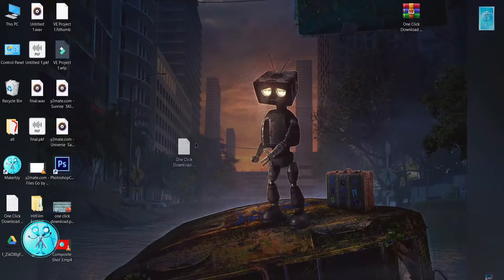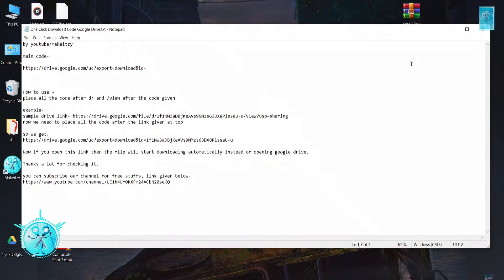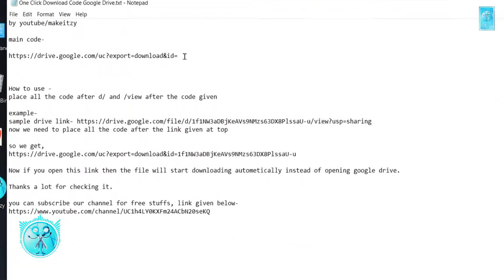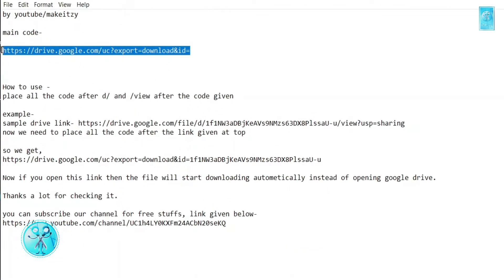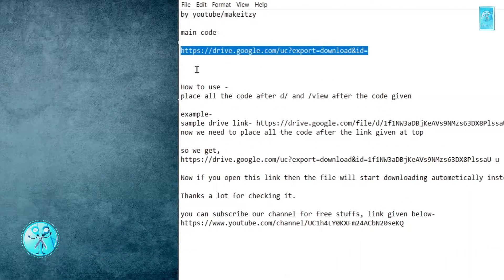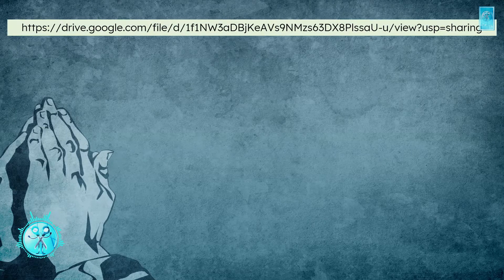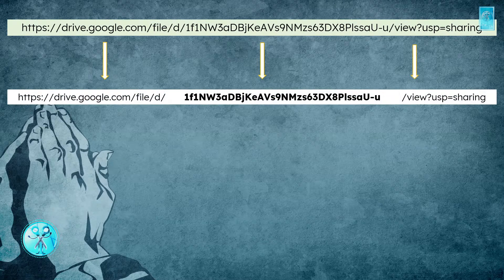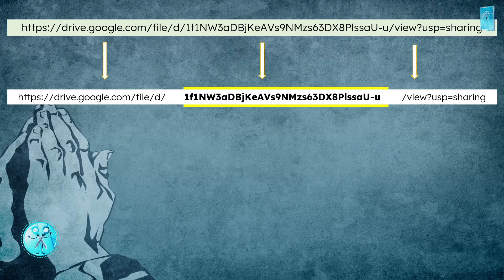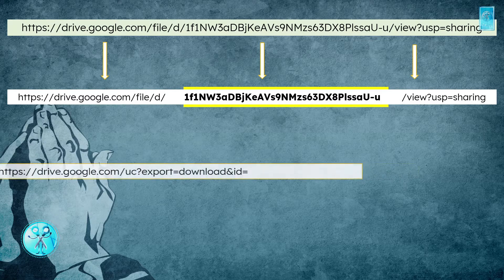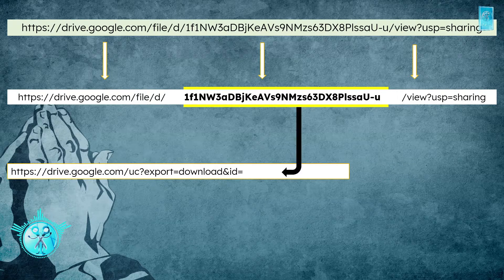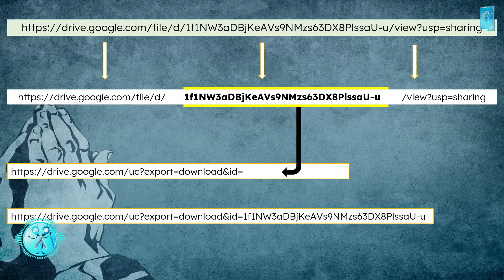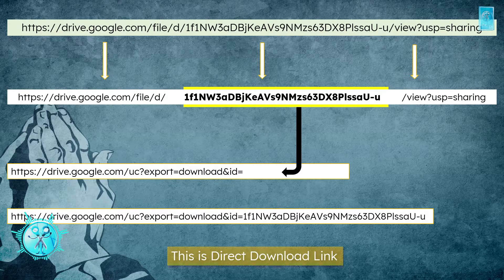Now open that file. Here you can see we have a code through which we will be changing the normal Google Drive link to a one-click download link. A Google Drive link has 3 sections — the first ends after slash d and the third starts after slash view. We need whatever text is in between these sections. We need to copy this link and paste it after the code present in the text file which we have downloaded from the website.